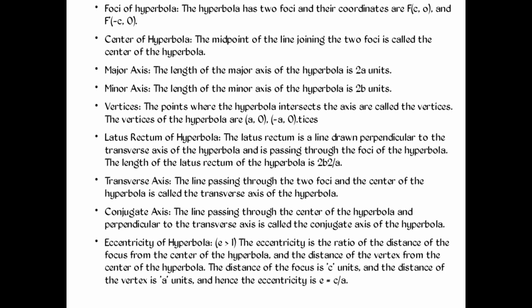The conjugate axis is the line passing through the center of the hyperbola and perpendicular to the transverse axis. It is called the conjugate axis of the hyperbola.